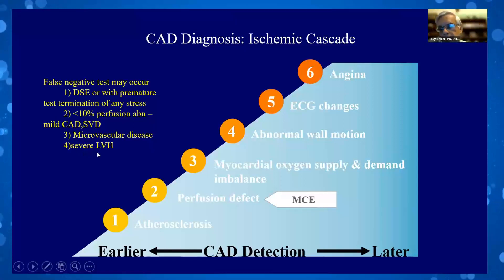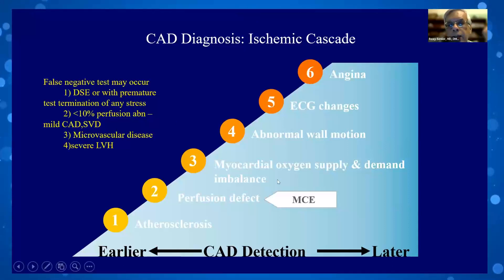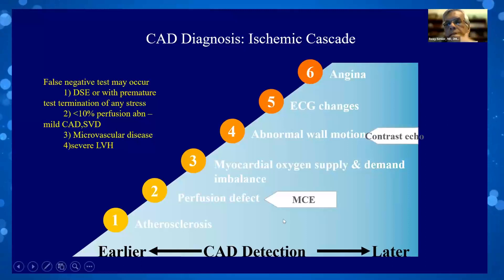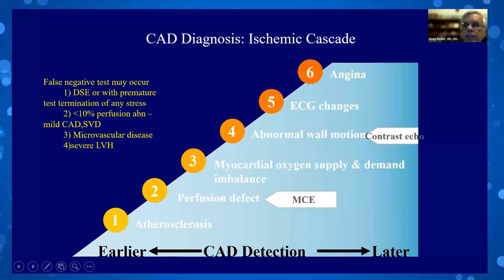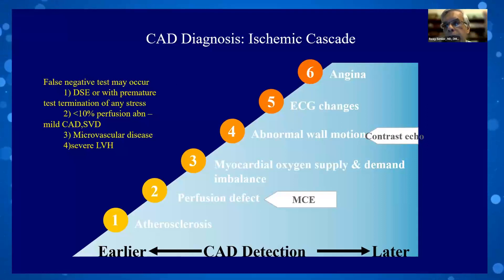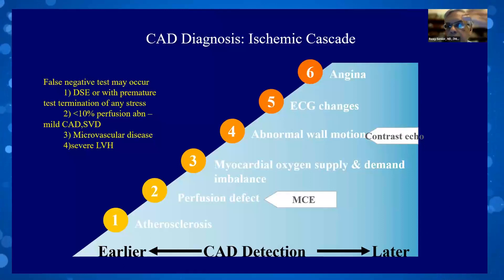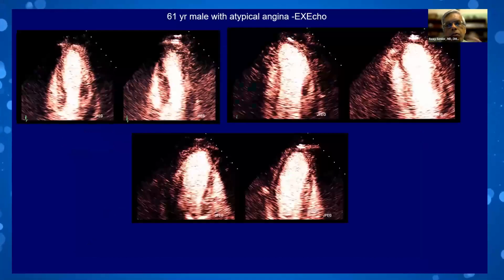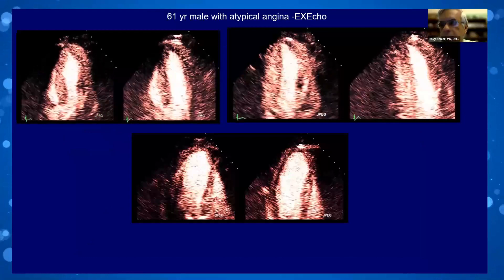In our lab, we use an ultrasound enhancing agent in nearly 90% of stress echo patients. We use a very low mechanical index, contrast-specific setting to look at wall motion, and simply by looking at the myocardium you can also see perfusion — it's not even a matter of switching. I'll show an example of how perfusion assessment helped in day-to-day clinical practice.